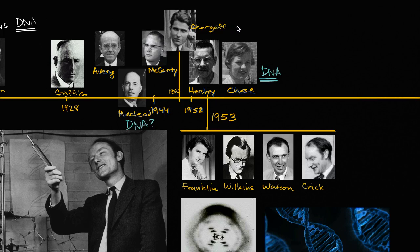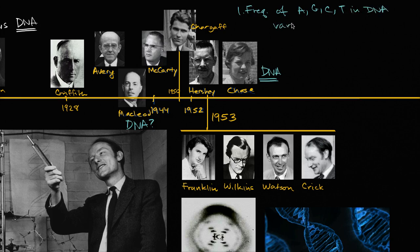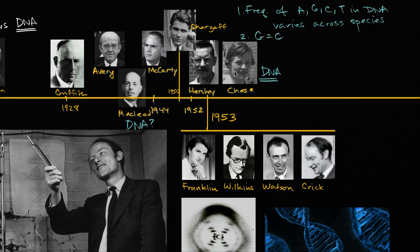Chargoff showed that DNA actually is more interesting than people appreciated. He noticed that the frequencies of the nitrogenous bases — adenine, guanine, cytosine, and thymine — in DNA varies across species. And something that's coding for what makes a species a species would have to vary across species, so that makes DNA interesting. He also noticed that the frequency of guanine equals the frequency of cytosine, and the frequency of adenine equals the frequency of thymine — a clue that these somehow pair with each other.